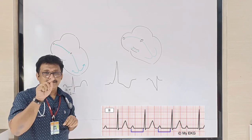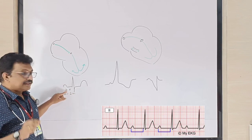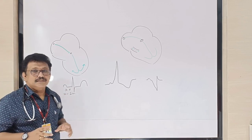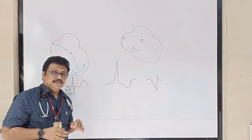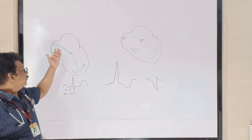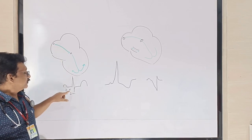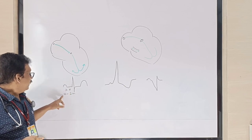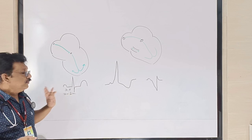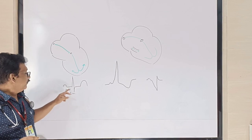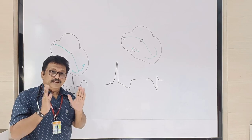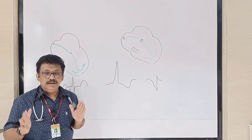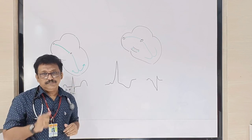When you are reading an ECG, you see small grids on the paper. Three to five small squares is the normal time taken for conduction of current from the SA node to the AV node. That corresponds to 0.12 to 0.2 seconds. If the gap between P and QRS is more than five small squares, it is abnormal. If it is less than three small squares, it is also abnormal.